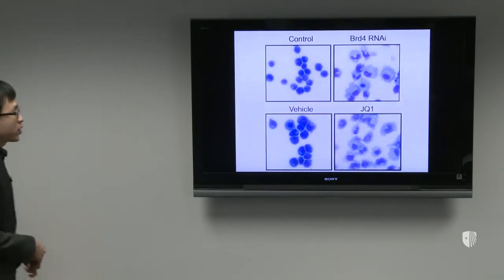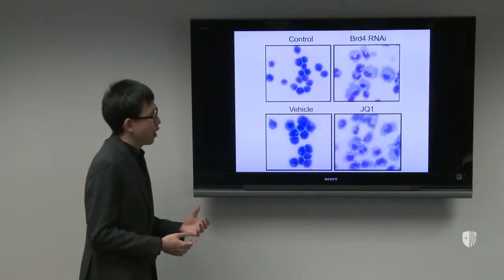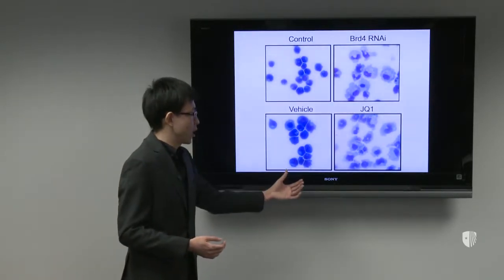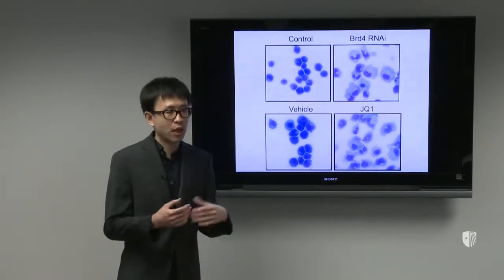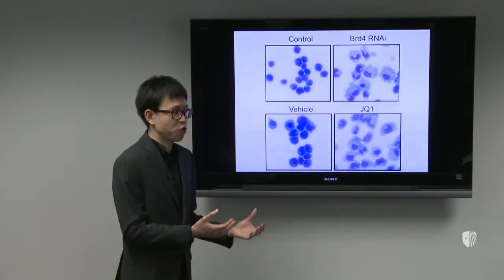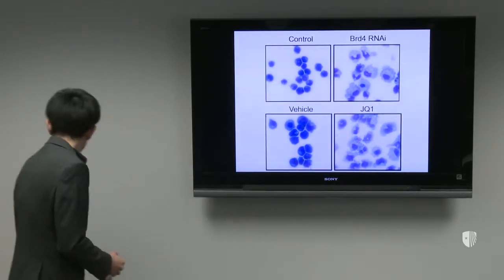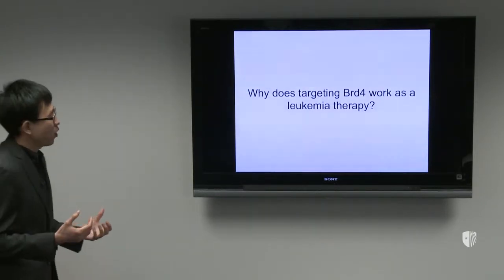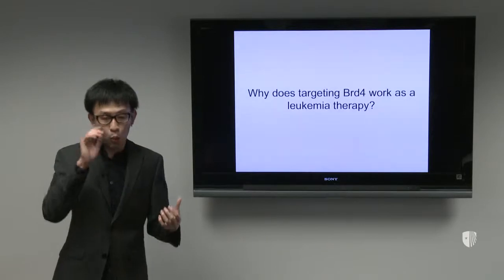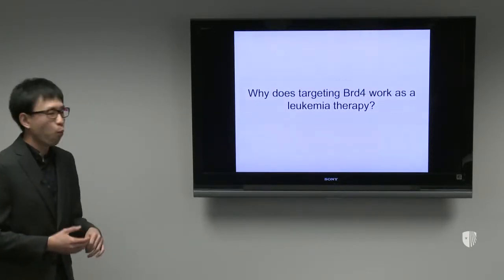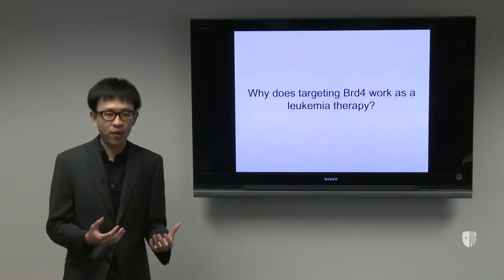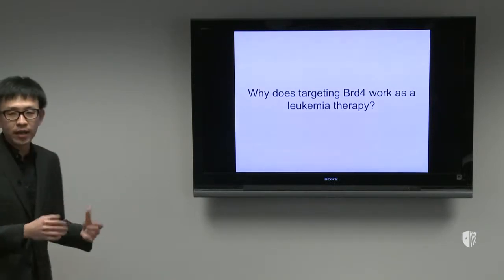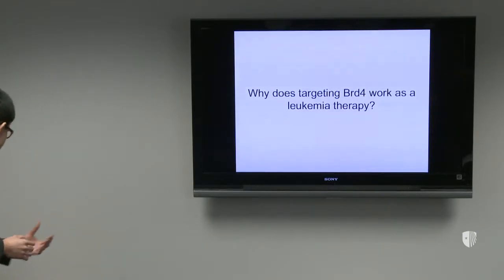To see how consistent the RNAi and the small molecule findings are — adding JQ1 to leukemia cells, we also see the cells differentiate to a normal cell shape, consistent with the RNAi result. Getting into more detail: it looks like BRD4 inhibition works, but why does it work in leukemia therapy? We want to know the mechanism that can account for this therapeutic effect.